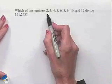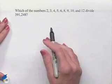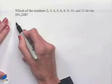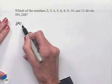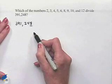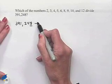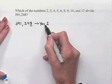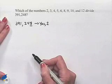Let's start with the number 2. To determine whether or not a number is divisible by 2, we're going to look at the last digit. So when we look at 391,248, we can look at the value of 8 and decide that yes, 2 is going to be a divisor of this particular number. Yes for 2.